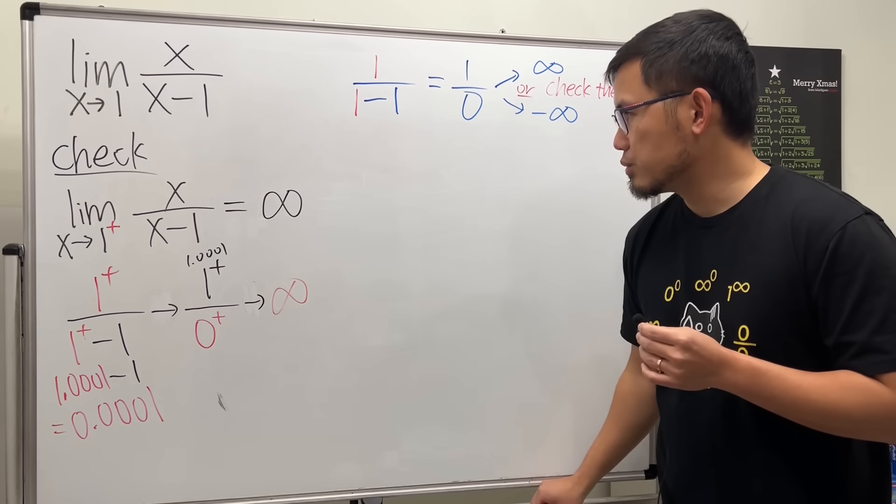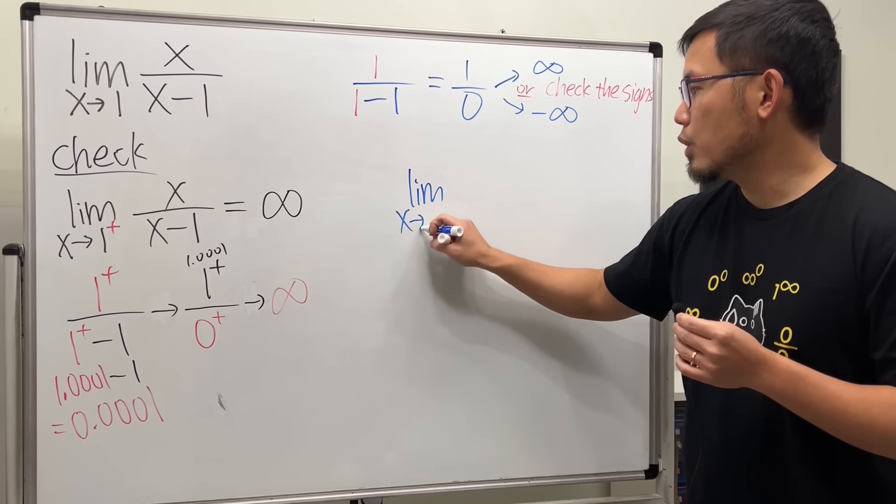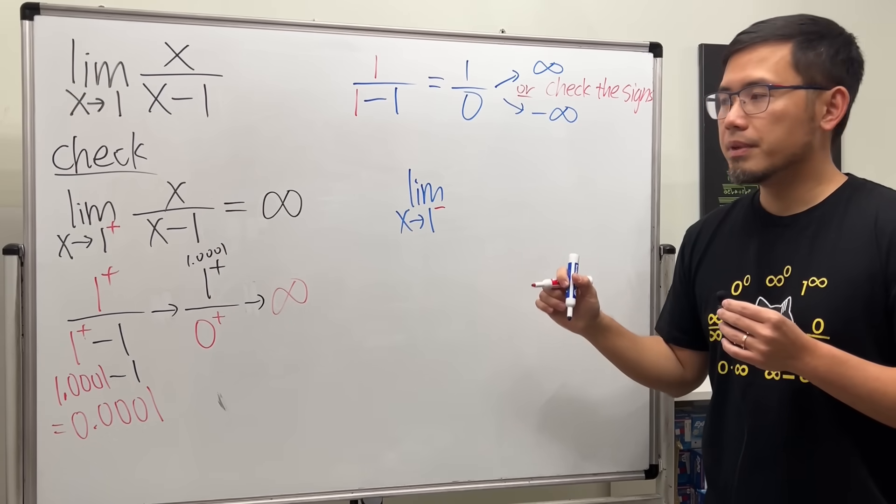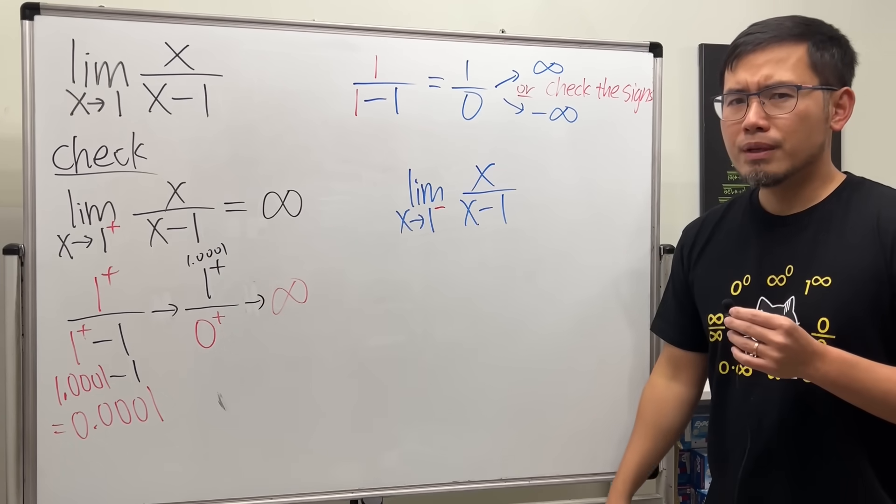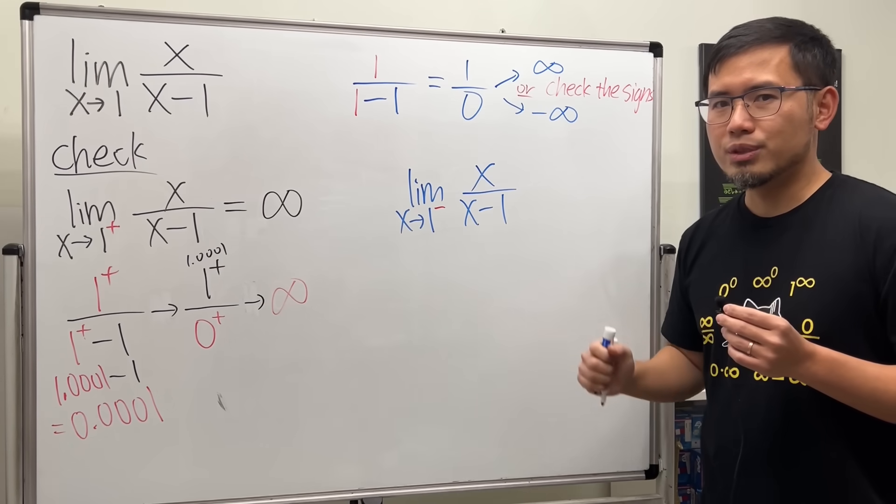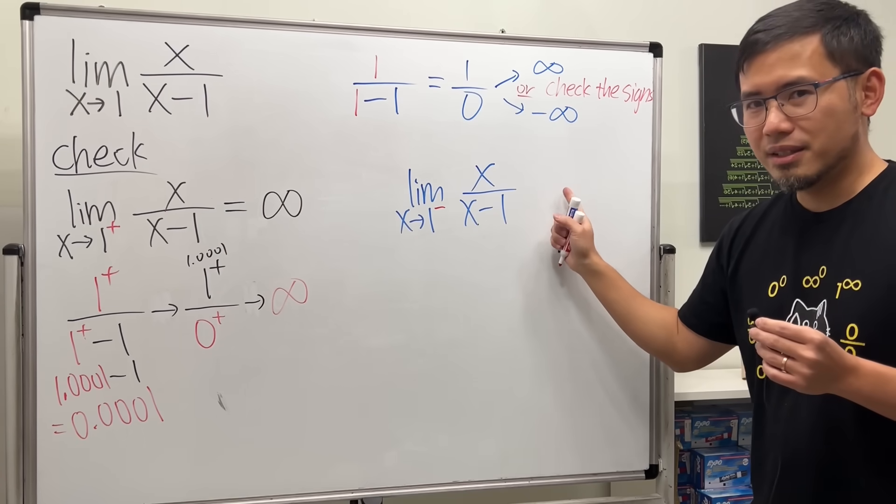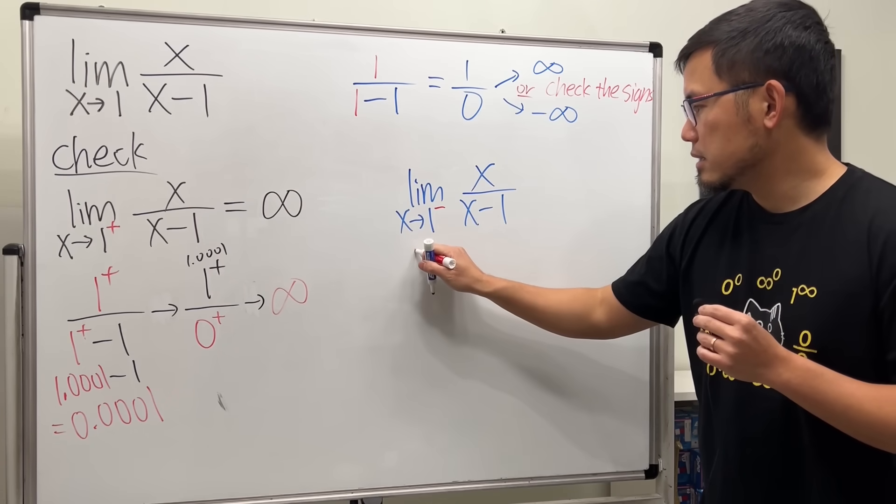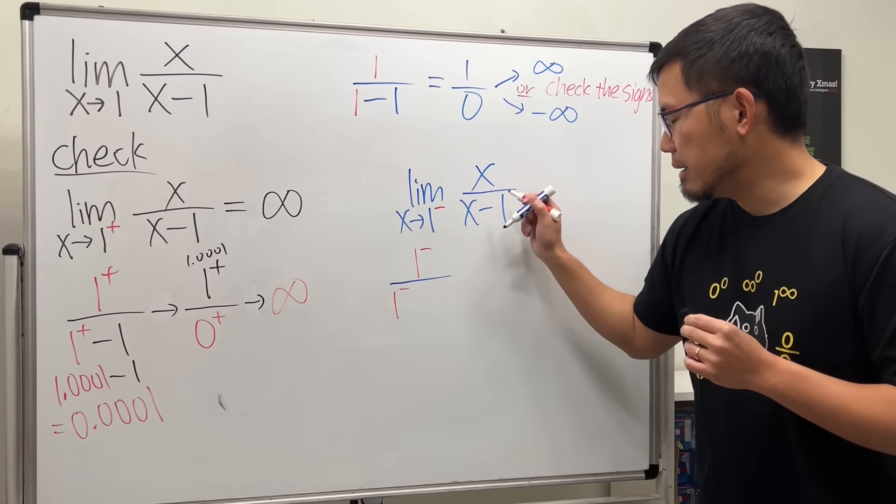Let's do the other side. Let's take a look at the limit as x approaching 1 from the negative direction. So we have a minus here. And then we have x over x minus 1. Go ahead and give it a try. You should get negative infinity here. Let's see. Put 1 minus into the x over... Put 1 minus into this x. And then minus 1.